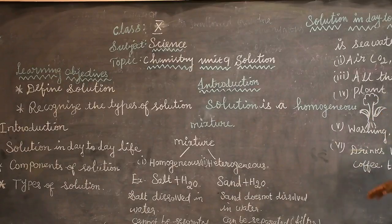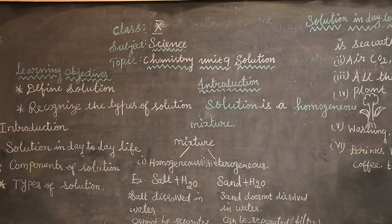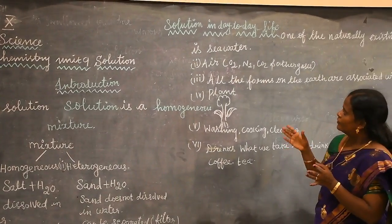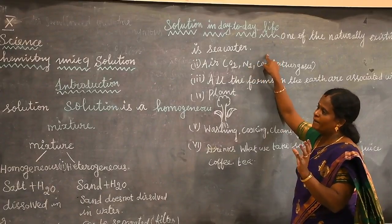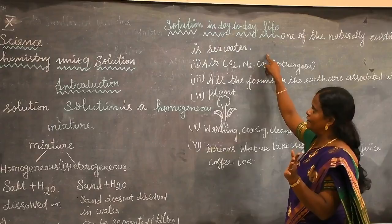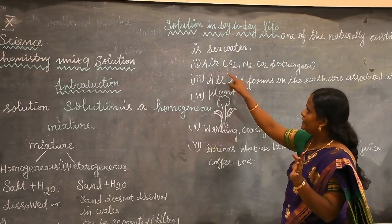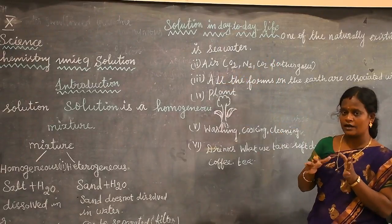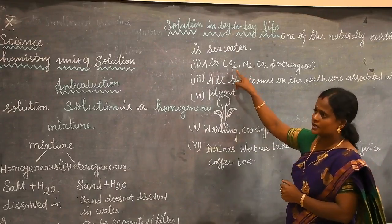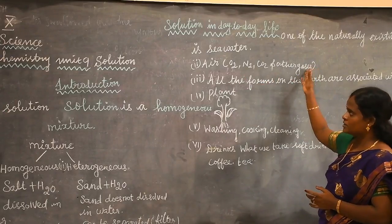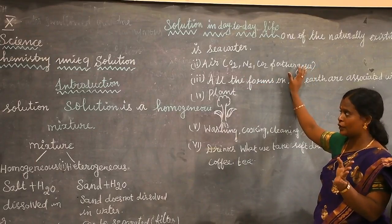Next, let us see solution in day to day life. One of the naturally existing solutions is sea water. Sea water is a mixture of very many salts dissolved in it. Another one is air. Air is a mixture of gases — carbon dioxide, hydrogen, oxygen and other gases are present in the air.